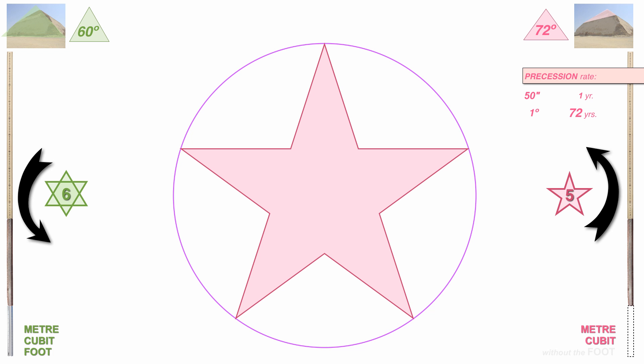The full 360-degree cycle, if that rate were to remain steady, would take 25,920 years. That's the most commonly quoted value of the great year of precession.